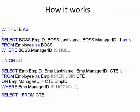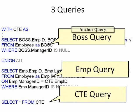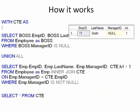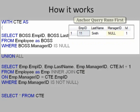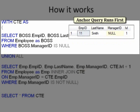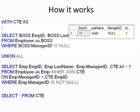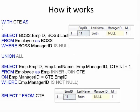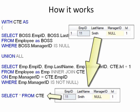How exactly does this recursive common table expression work? To break it down, let's keep in mind we have three queries at work here. The first thing that happens is the boss query runs and it only finds one record. The moment that first query runs, it immediately puts that same record in the common table expression query.